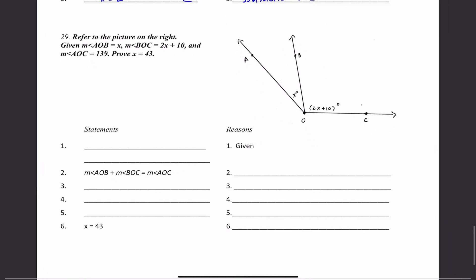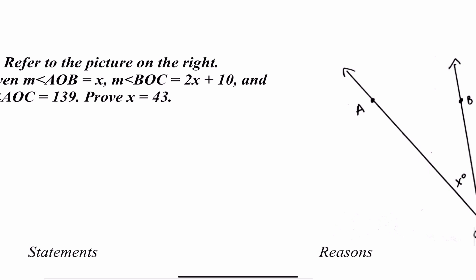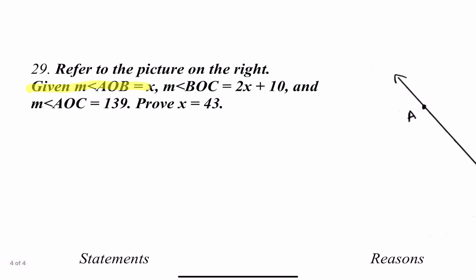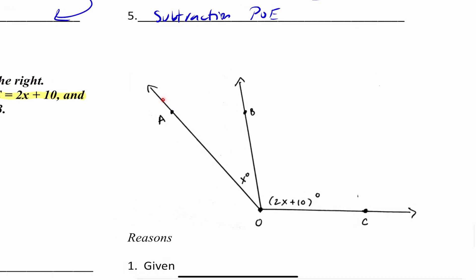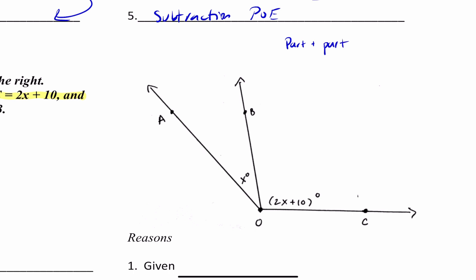I'm not going to look at the proof yet, but I know this is something I can assume. Given that measure angle AOB is X, measure angle BOC is 2X plus 10, and measure angle AOC is 139. Just by looking at this picture, it looks like I'm dealing with part plus part equals whole — the angle addition postulate.